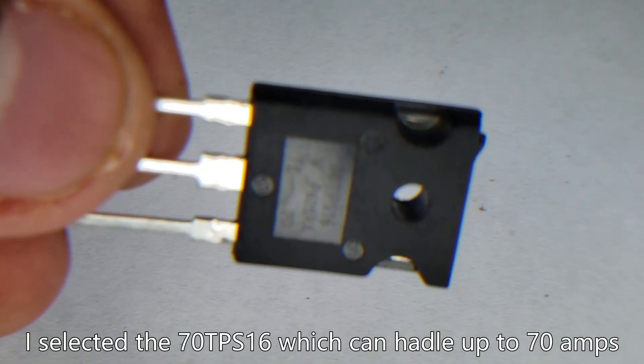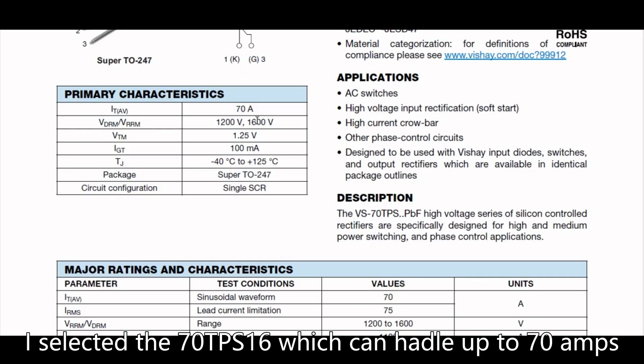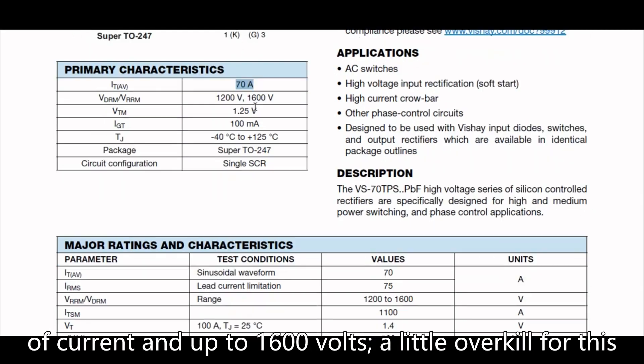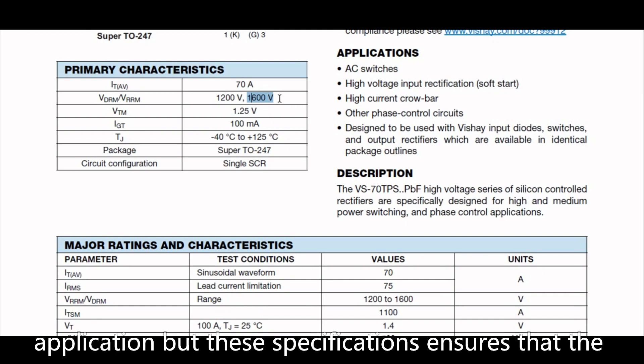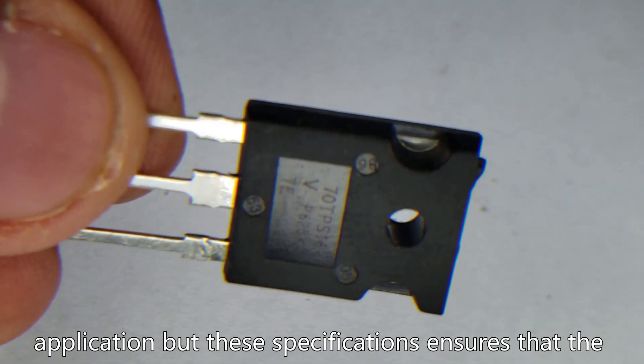I selected the 70TPS16 which can handle up to 70 amps of current at up to 1600 volts. A little overkill for this application but these specifications ensure the device runs cool.